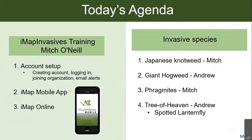With that introduction of what IMAP Invasives is and how it fits into invasive species efforts in New York, here's what we'll cover today: an IMAP Invasives training, including how to set up an account; then Andrew will give a run-through of the mobile app; then I'll show what happens to your data after you submit it. We'll also go through some species IDs — important, impactful invasive species that you're likely to find, even in your neighborhood or backyard.